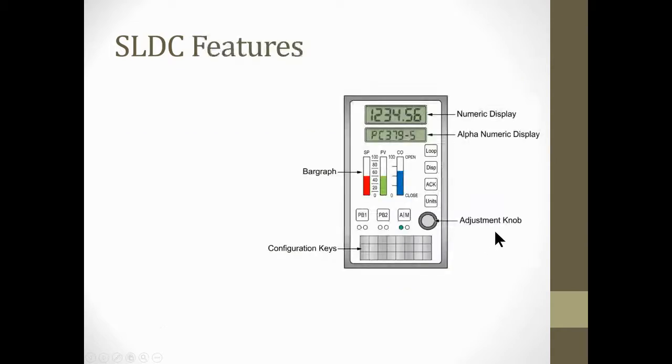Here's what it looks like. The single loop digital controller features: we have a faceplate and the display shows setpoint, PV, and CO. If you look at these bar graphs here, you got a setpoint, this is my setpoint and this is my PV, and this will be my control output. So it actually has bar graphs on here that show you that.